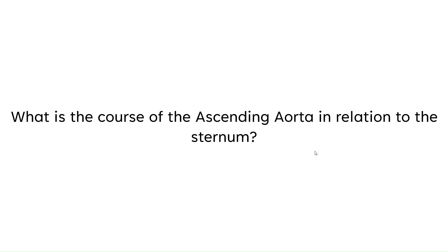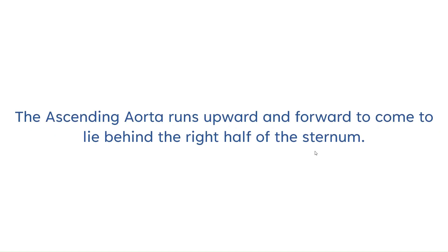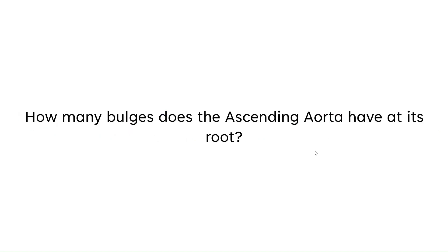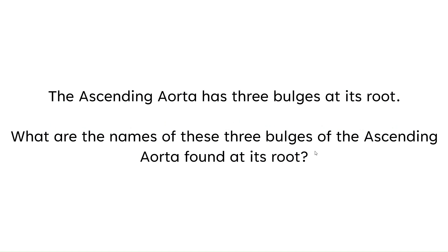What is the course of the ascending aorta in relation to the sternum? The ascending aorta runs upward and forward to come to lie behind the right half of the sternum. Does the ascending aorta have bulges at its root? Yes, the ascending aorta has bulges at its root. How many bulges does the ascending aorta have at its root? The ascending aorta has three bulges at its root.